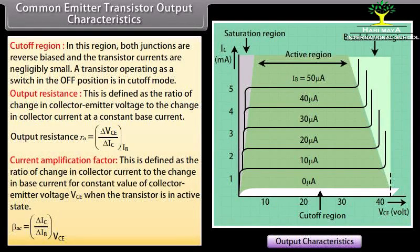Current amplification factor is defined as the ratio of change in collector current to the change in base current for a constant value of collector-emitter voltage VCE when the transistor is in the active state.